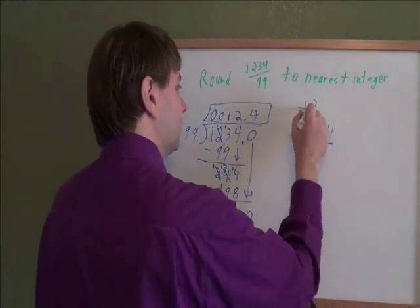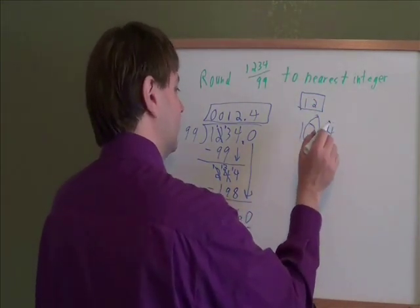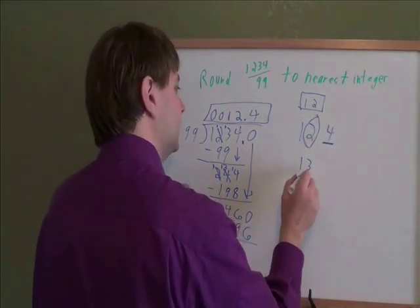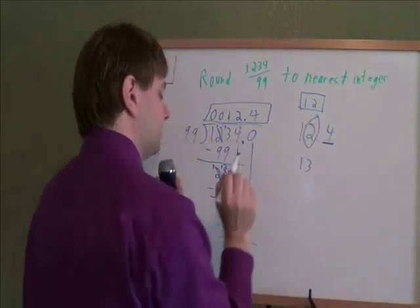We want to round to the nearest spot right there, so it'll either stay at 12 or go up to 13. And we look at the next piece to see. The next number, the next digit, is a 4. That's small. If you're 4 or smaller, you round down, you stay at 12. If this was 5 or 6 or 7, anything 5 or bigger, you would have rounded up to 13. But it was 4. It was small. You round down. Our answer is 12.